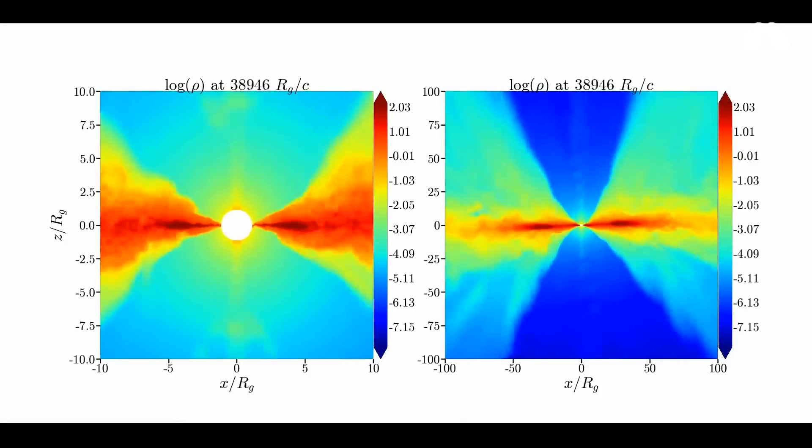They published a video of their simulation, which includes a focus on the nature of what's called accretion disks. This is the matter that orbits a black hole and eventually falls in.